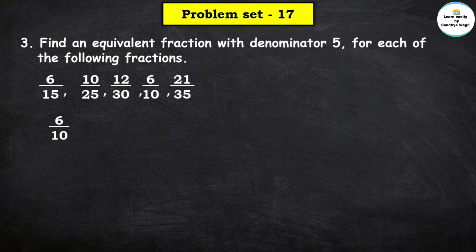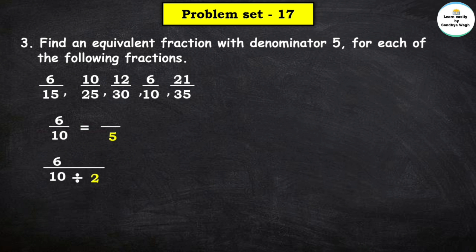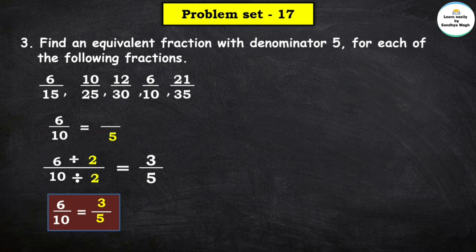Next is 6 upon 10. We need the equivalent fraction with denominator 5. 10 divided by which number equals 5? 10 ÷ 2 = 5. So we divide numerator by 2 as well: 6 ÷ 2 = 3 and 10 ÷ 2 = 5. So 3 upon 5 is the equivalent fraction of 6 upon 10 with denominator 5.